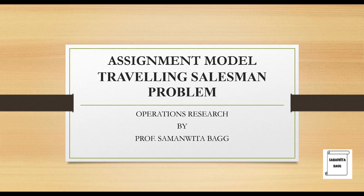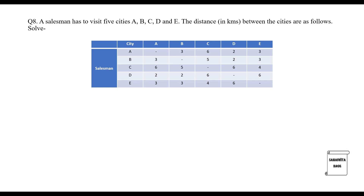Hello everyone, welcome to the next session on operations research. In this session we will discuss another problem on the topic of traveling salesman problem, which is a type of assignment model. A salesman has to visit five cities: A, B, C, D, and E. The distance in kilometers between the cities are as follows. These are the salesman A to E and these are the cities A to E, five of them.